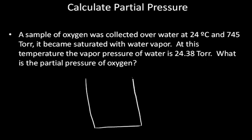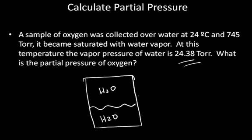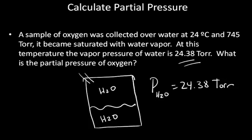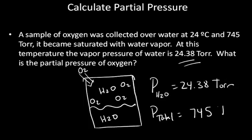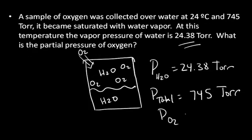In this case, what's going on is you have a closed container. It contains water, and in the closed container at this temperature, the vapor pressure of water is 24.38 torr. What that means is that the partial pressure of the water vapor above its own liquid in this closed container must be 24.38 torr. Oxygen has been collected over this water, and all we know is that the total pressure is 745 torr. The question is: what is the partial pressure of the oxygen?